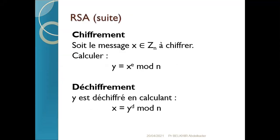Voici l'algorithme de chiffrement et de déchiffrement. On chiffre avec la clé publique et on déchiffre avec la clé privée. Quelqu'un de prime abord, quand il voit ça, peut être un peu surpris en disant : j'ai chiffré une certaine quantité, ensuite quand je déchiffre, je vais faire l'exponentiation modulaire et je vais obtenir le message en clair.